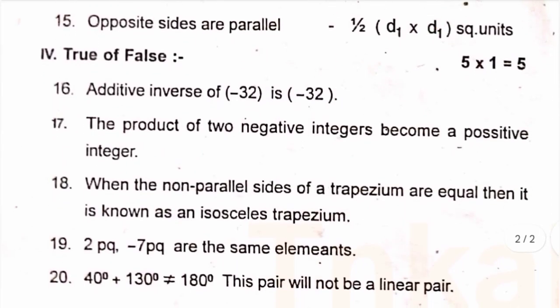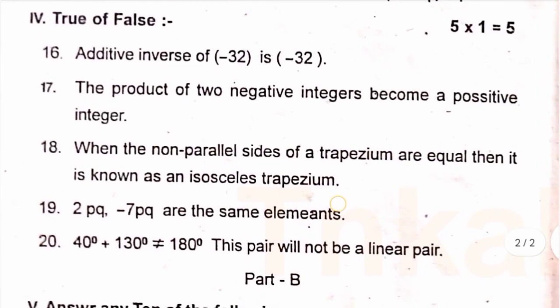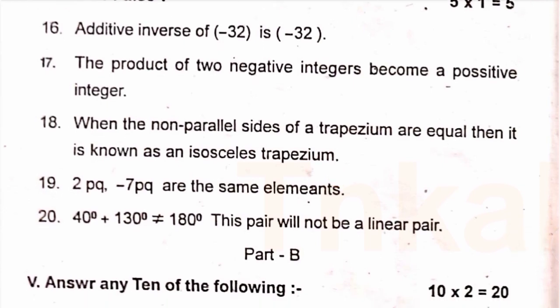Roman numeral 4 — true or false. Question 16: additive inverse of minus 32 is minus 32 — this is true or false? Question 17: the product of two negative integers becomes a positive integer. Question 18: when the non-parallel sides of a trapezium are equal, then it is known as an isosceles trapezium. Question 19: 2pq and minus 7pq are like terms. Question 20: 40 degrees plus 130 degrees is not equal to 180 degrees — this pair will not be a linear pair.